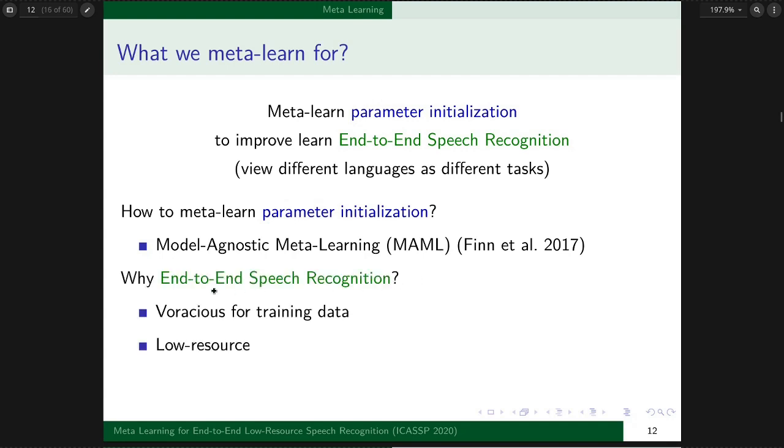We adopt model-agnostic meta-learning, also known as MAML, to address this. For the second question, although end-to-end models are easier for deployment, they're voracious for training data. For most languages, it's costly to build large enough corpora, so we only have low-resource versions. This aligns with meta learning's goal of fast adaptation on unseen tasks, in this case unseen languages.